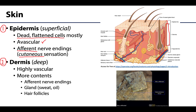The dermis is the deeper neighbor of the epidermis but is still considered part of the skin, and this is where all the action happens in terms of contents. This layer is highly vascularized — red means arteries, blue means veins — and it also contains glands (both sweat and oily glands), hair follicles, and afferent nerve endings in a much higher density than the epidermis. The composition of collagen and elastic fibers in the dermis plays a big role in giving skin its strength and toughness.